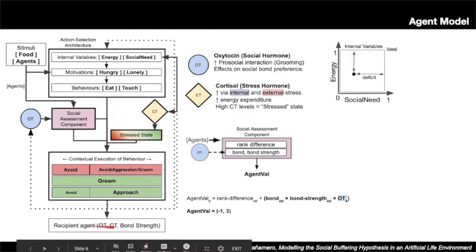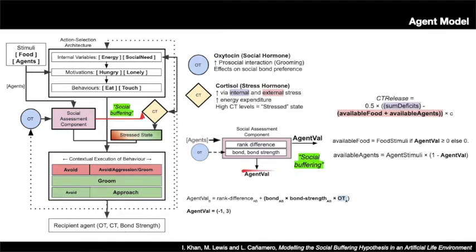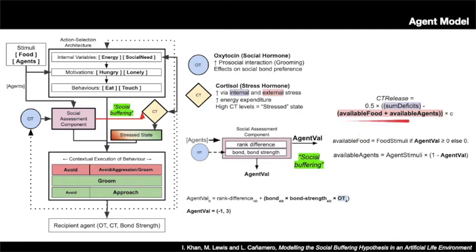Behaviour execution releases further hormones and satisfies one of the two internal variables depending on which behaviour was executed. It also affects the recipient agent's hormonal state and the strength of a bond if one exists. The stress-reducing effects of social bonds are accounted for by using bond presence to offset the cortisol release rate associated with a stressful environment — defined as the lack of available food and agent resources.